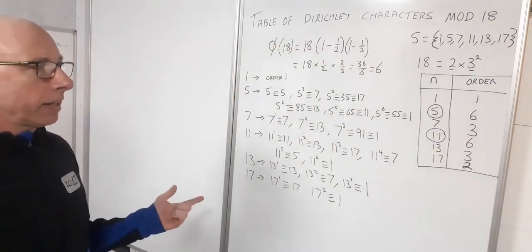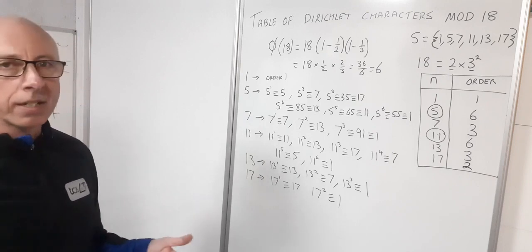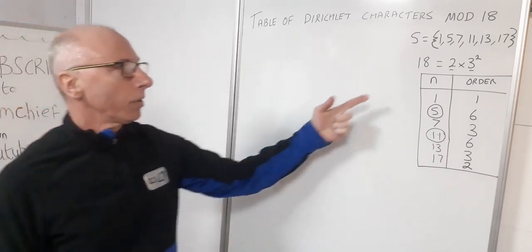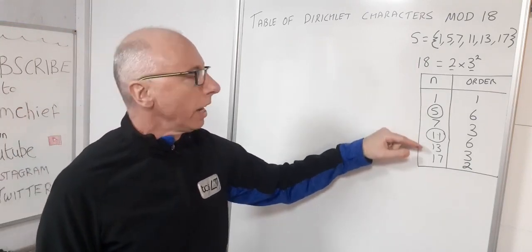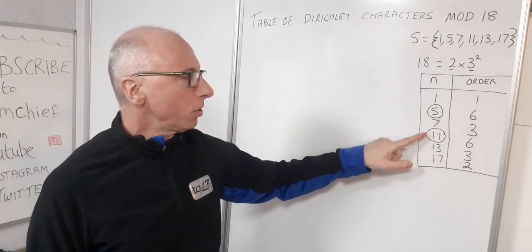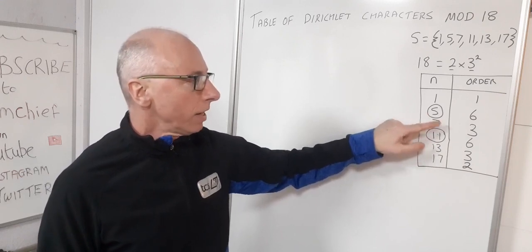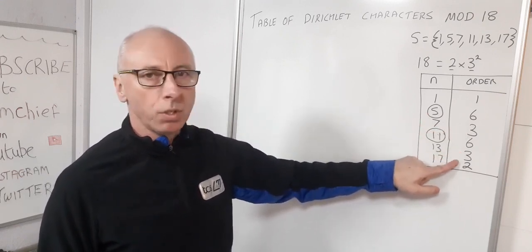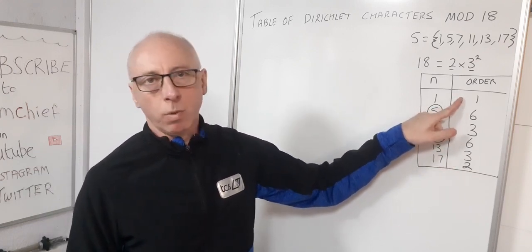Let's take these numbers off the board and move to the next stage of table collation. We have our elements 1, 5, 7, 11, 13, 17. Elements 5 and 11 are of order 6, giving 6 different solutions each. Element 7 and 13 each have order 3, giving 3 solutions. Element 17 has order 2, giving 2 solutions, and 1 has order 1.